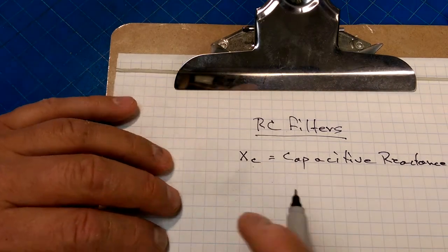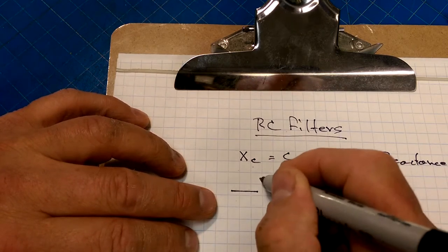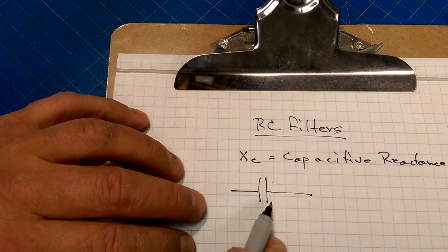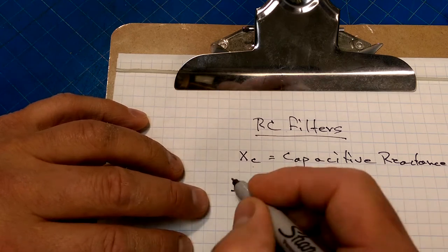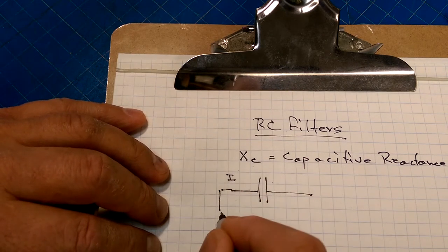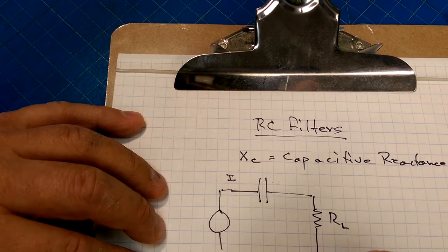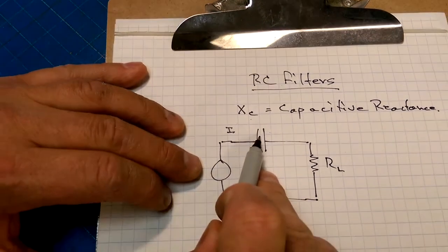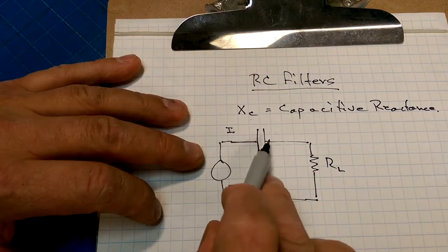We think of capacitors as short circuits for alternating current or signals that are fluctuating, and they block DC signals. The reason for that is at steady state current, a capacitor will charge up. But since there's no electrical connection between these two plates, no current flows. The charge on the capacitor will build up to a point where it can't hold any more charge, and then no current will flow.